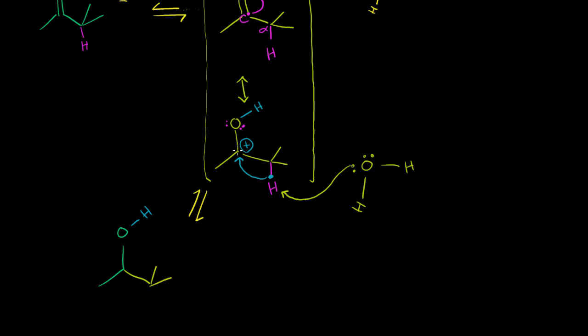But now this electron gets given back to this carbocation. We now have a double bond here between our carbonyl carbon, or what was a carbonyl carbon, and our alpha carbon. So now we have this double bond right over here. That hydrogen has been taken by the water. And now that is hydronium.